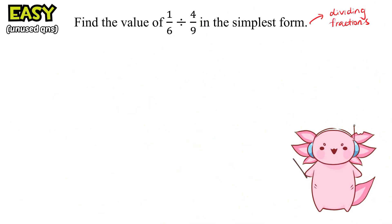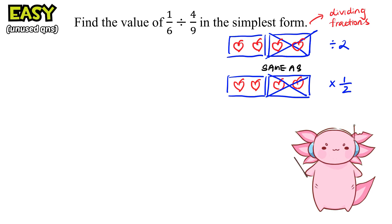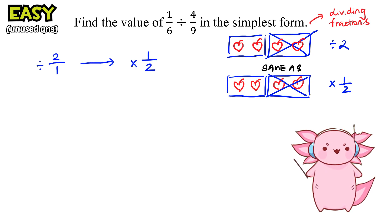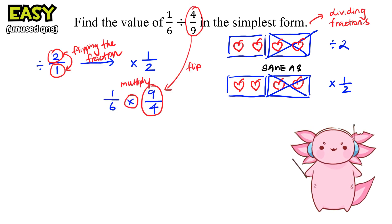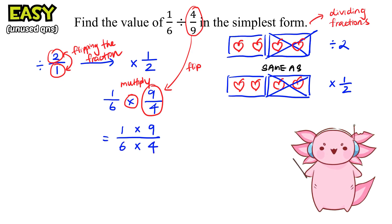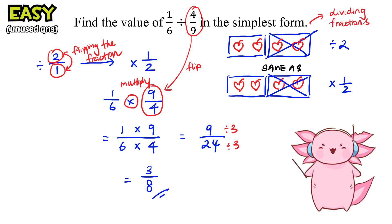This question is all about dividing two fractions. Dividing by 2 is the same as multiplying by half, so changing a divide to a times means flipping the fraction. Flipping 4 over 9 to get 9 over 4 and changing it to multiplication, we multiply top and bottom to get 9 over 24. Dividing numerator and denominator by 3, we simplify to get 3 over 8.